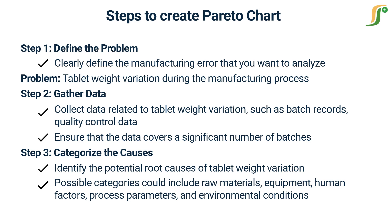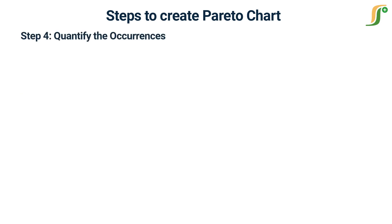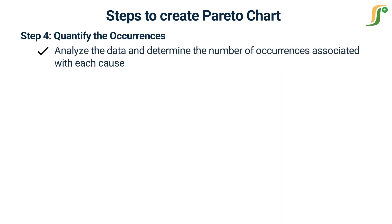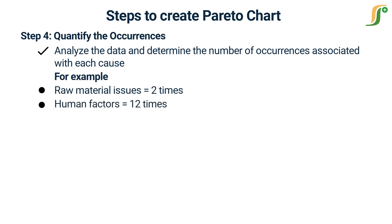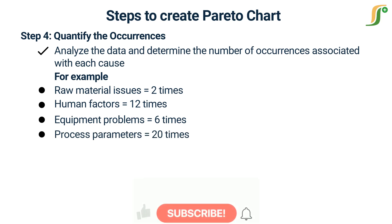Possible categories could include raw materials, equipment, human factors, process parameters, and environmental conditions. These categories represent the main areas where the causes of manufacturing error may lie. Step 4 — Quantify the occurrences: analyze the data and determine the number of occurrences associated with each cause. For example, raw material issues were responsible for weight variation 2 times, human factors 12 times, equipment problems 6 times, and process parameters 20 times.